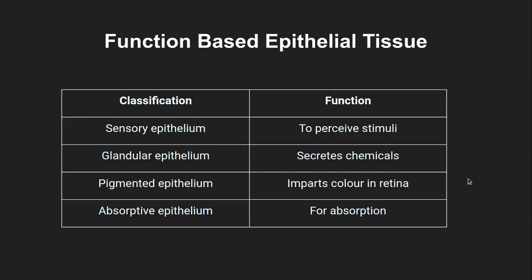Based on function, you can also classify epithelial tissue. Sensory epithelium consists of tissues that perceive a stimulus — for example, the nose or skin; they are all epithelial tissues that perceive stimuli. Glandular epithelium secretes chemicals — for example, the stomach lining has certain cells that secrete acid, or intestinal inner lining secretes intestinal juices, and the oral cavity has salivary glands — those are glandular epithelium. Pigmented epithelium imparts color — in the retina and in the skin, the complexion depends on how much melanin pigment is present, and that melanin is also in the epithelium.